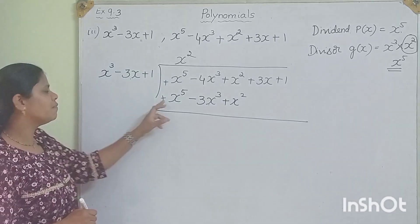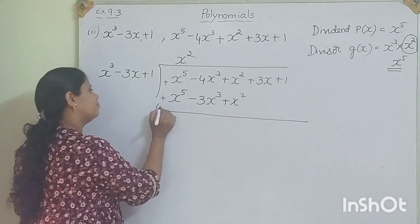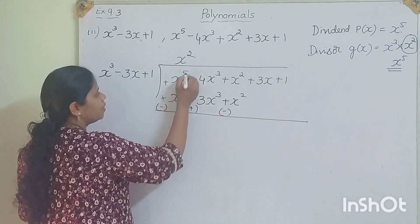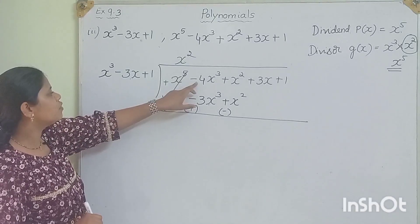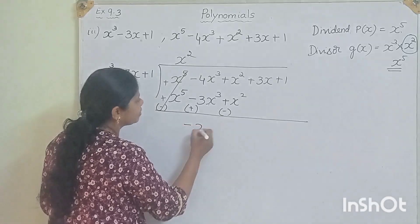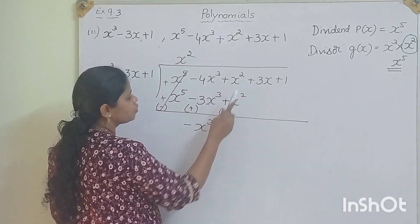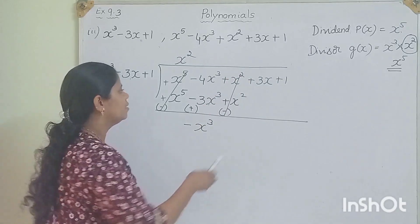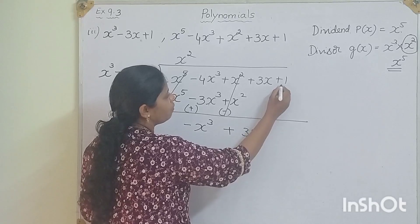We change the signs and subtract. x⁵ minus x⁵ cancels. Minus 4x cubed plus 3x cubed gives minus x cubed. Plus x squared minus x squared cancels. The remaining terms are plus 3x plus 1.